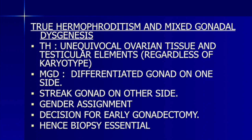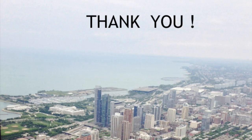The differential diagnosis was between true hermaphroditism — an extremely rare condition — and mixed gonadal dysgenesis. This turned out to be true hermaphroditism. In true hermaphroditism there is unequivocal ovarian tissue, as seen on the left side, and testicular elements, regardless of karyotype. In mixed gonadal dysgenesis there is a differentiated gonad on one side but a streak gonad on the other. These distinctions are important for gender assignment, early gonadectomy decisions, and hence biopsy — along with karyotyping — is essential in these cases. Thank you very much.